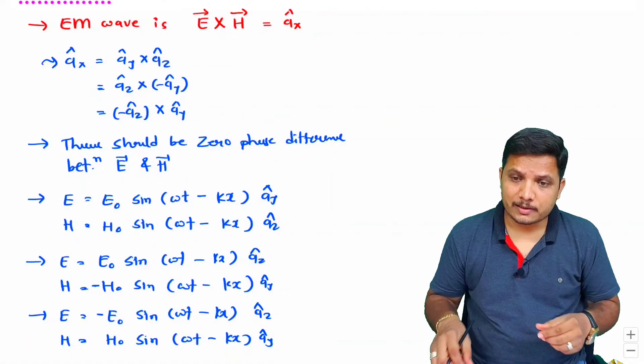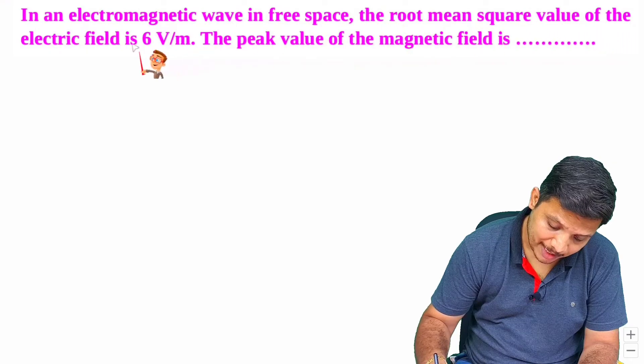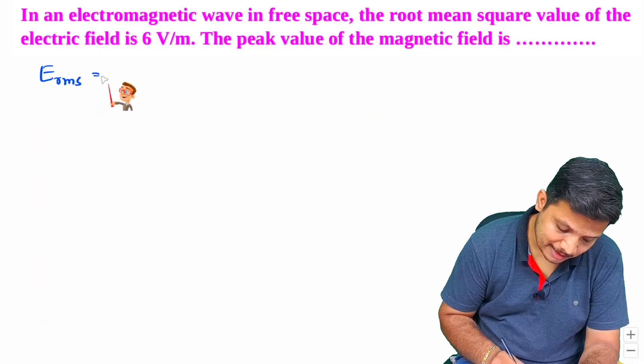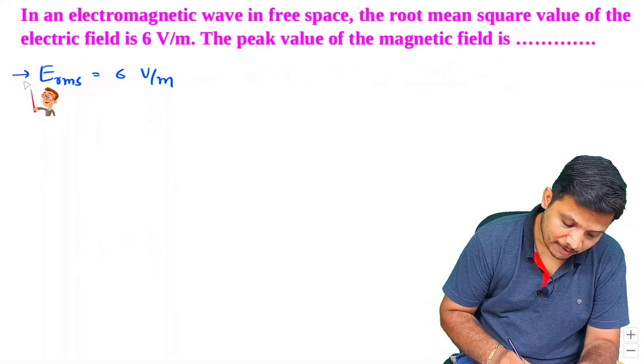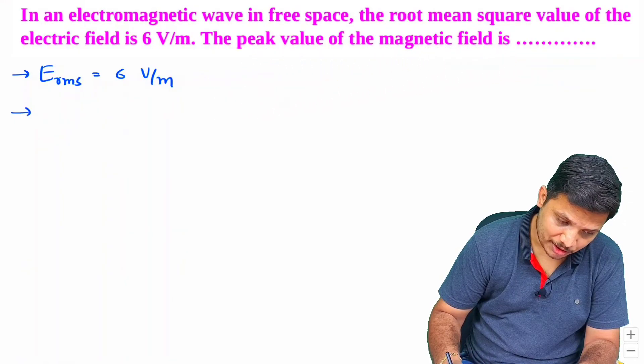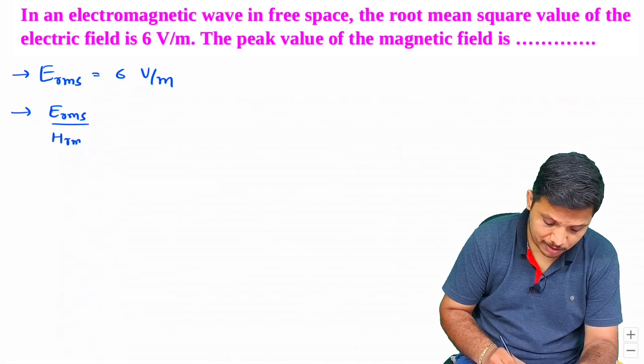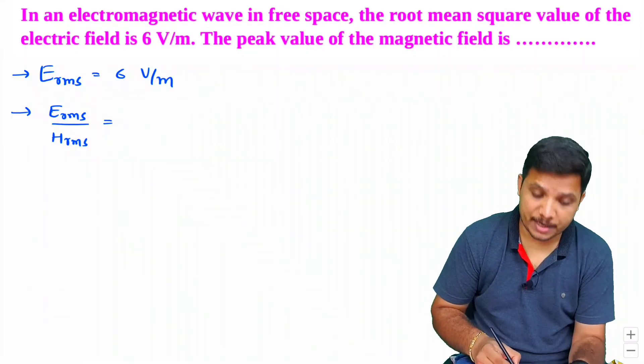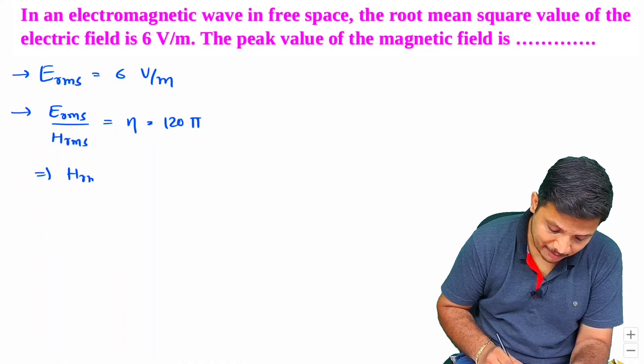Let us have a few more questions. So next question is: in an electromagnetic wave in free space, the root mean square value of electric field is 6 volt per meter. So here E_rms that is given 6 V/m. The peak value of magnetic field is how much? So our question is to identify peak value, not rms value. Remember this, peak value is the question. Now see the basic formula of E_rms and H_rms that we know: E_rms divided by H_rms that equals intrinsic impedance. So that is η and that value is 120π.